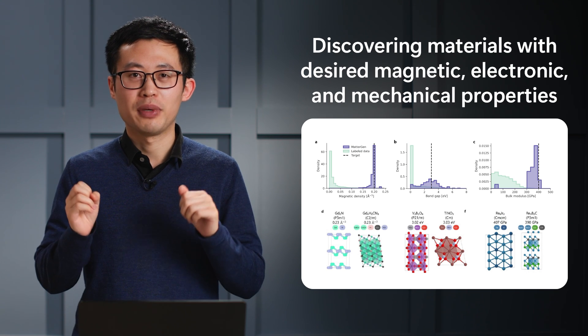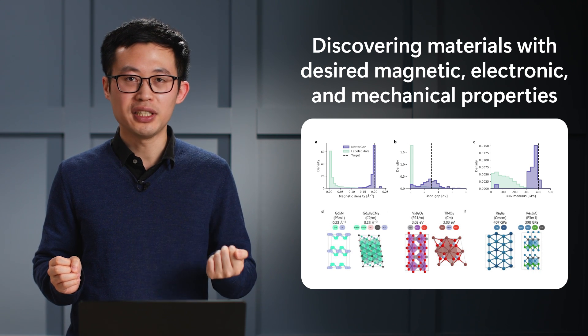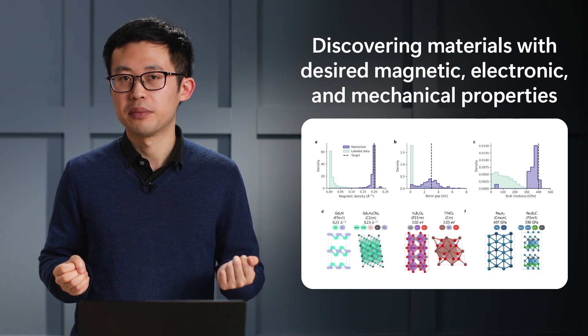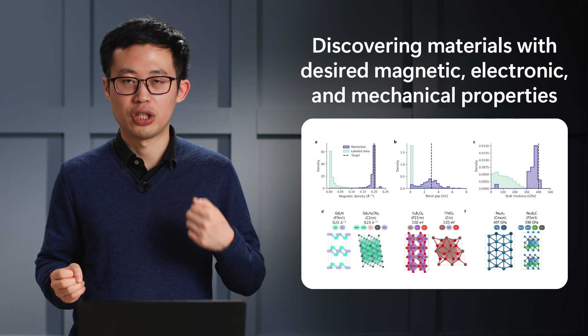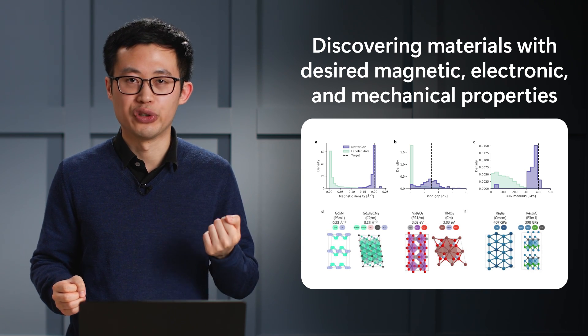This is very significant because most of the material design problem involves finding materials with extreme properties, like finding super-hard materials, or materials with high magnetism, which is difficult to do with traditional searching-based methods and is the key advantage of generative models.